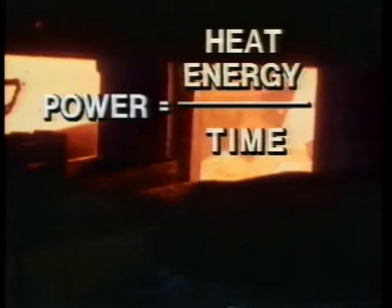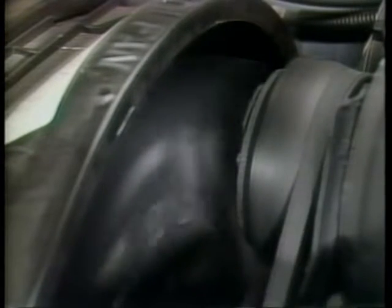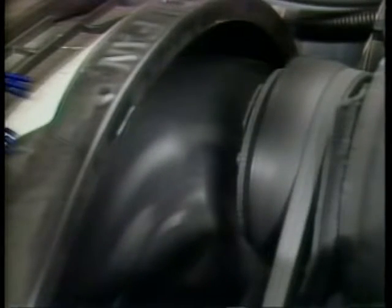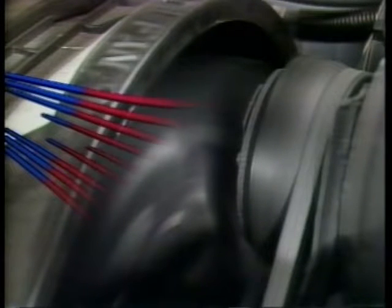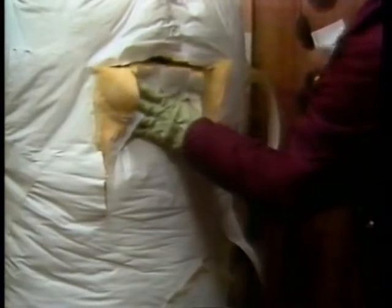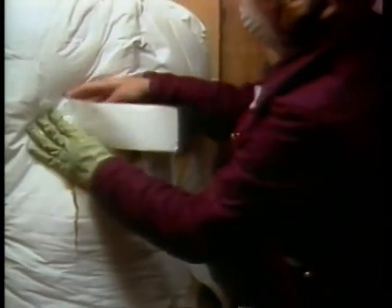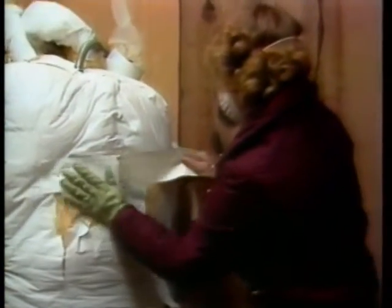In other words, thermal rate and thermal power are defined the same way, and they use the same units — BTUs per hour or calories per second. The difference between thermal rate and thermal power is one of application. Thermal rate is used when we're concerned with the movement of heat energy, such as radiators, which try to move it as quickly as possible, and insulators, where we're trying to slow down the rate of heat flow as much as possible. Those are thermal rate applications.